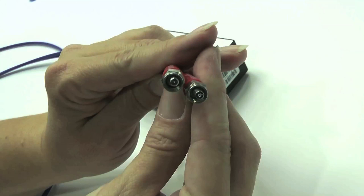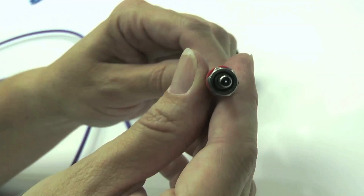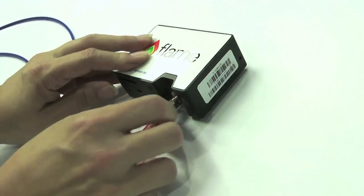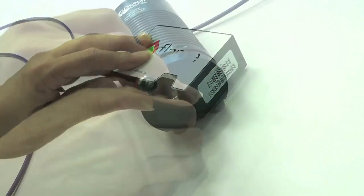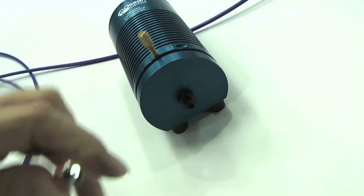The reflectance probe has two fiber ends with SMA connectors. One consisting of a single fiber and the other with six fibers arranged as a circle. For optimal performance connect the single fiber to your spectrometer and the other to your light source.